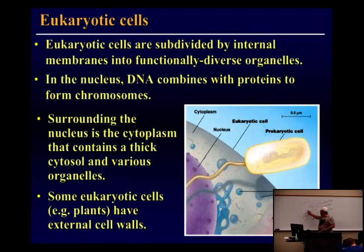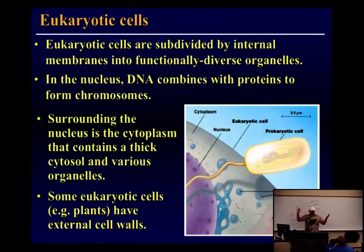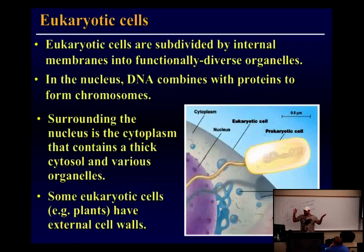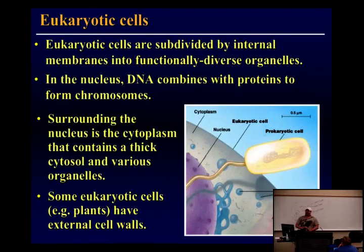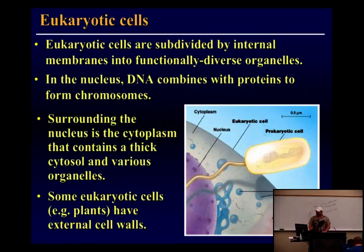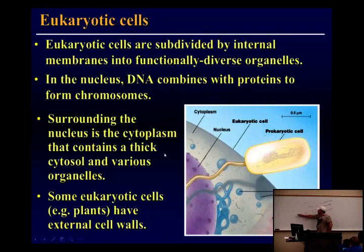If there wasn't a membrane around the lysosome, it couldn't maintain a pH of 5.0 while the rest of the cell is 7.2 to 7.6. So organelles have a specialized function. Prokaryotes do not have organelles, so they're not able to do specialized functions like eukaryotic cells. The outside part where the organelles aren't found is called the cytoplasm.